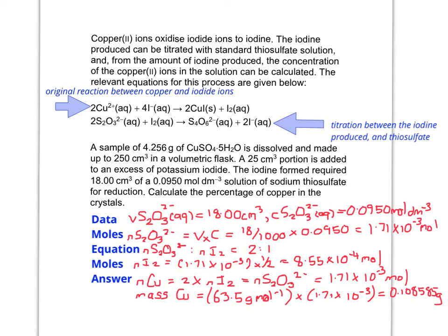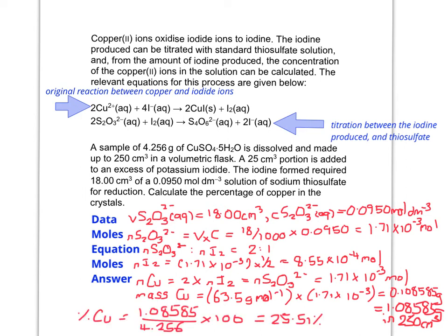Now you have to work out the percentage of copper in the crystals. Before you do that, remember that the titration was done on a 25 cm³ portion, so you've got to multiply that up by 10 to work out how much copper was in 250 cm³ — which gives us 1.08585 grams. Now we can do the percentage by mass, and that gives us 25.51% copper in the crystals.